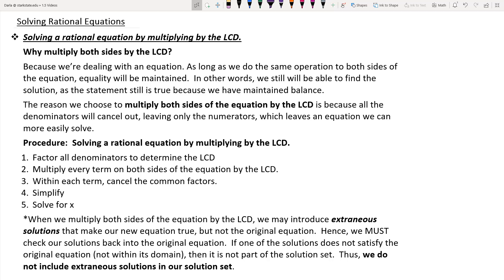To go through the procedure for solving a rational equation by multiplying by the least common denominator, we would start off by making sure that we factor both the numerator and the denominator. Factor it as best as you can down.